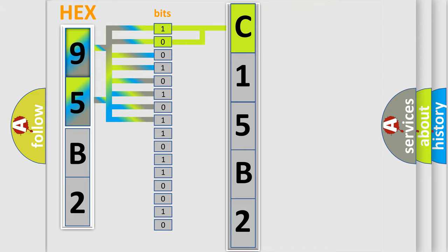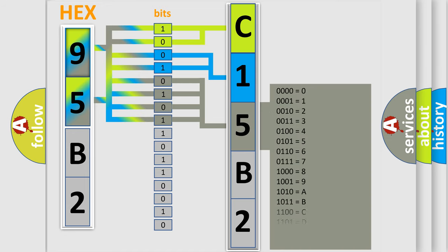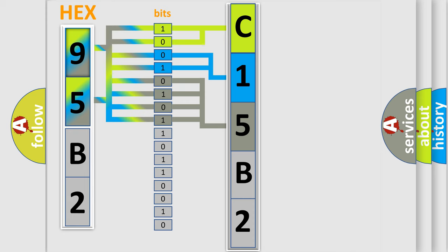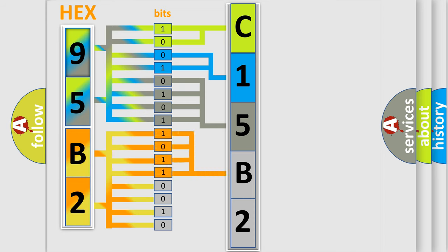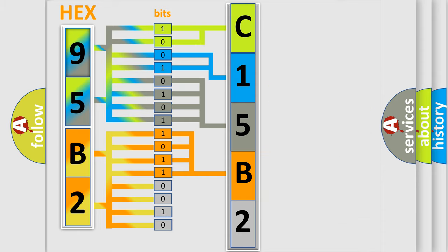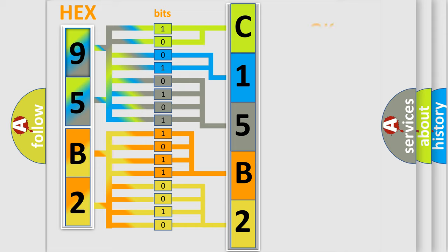The next two bits determine the second character. The last bits of the first byte define the third character of the code. The second byte is composed of a combination of eight bits — the first four bits determine the fourth character, and the combination of the last four bits defines the fifth character. A single byte conceals 256 possible combinations.